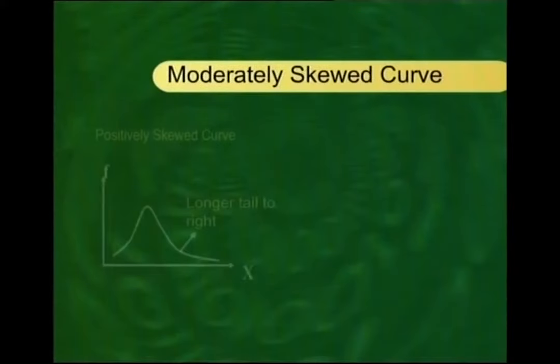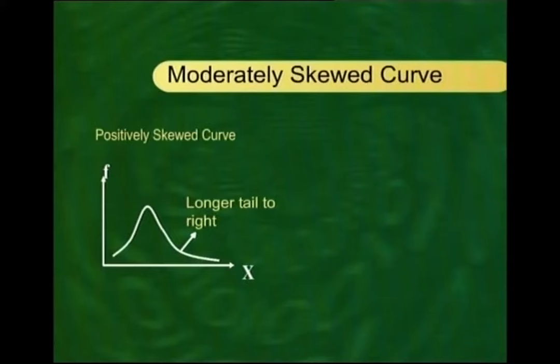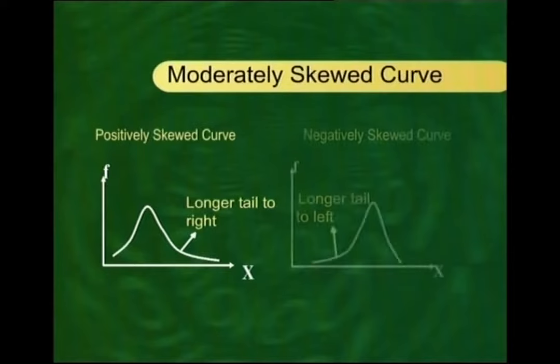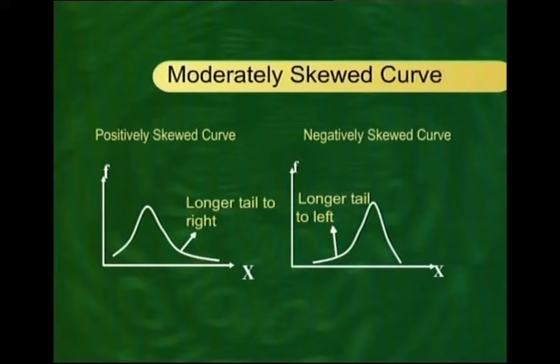Next, the moderately skewed frequency curve. Within this category we have two types: the positively skewed and the negatively skewed. Positively skewed is one in which the right tail is longer than the left tail. If you place a mirror between the two sides, the left-hand side is not the mirror image of the right-hand side, and this lack of symmetry is what is called skewness. Both of these are the moderately skewed distributions.